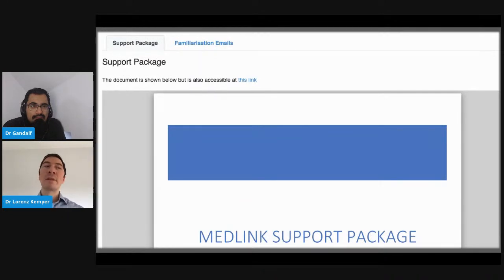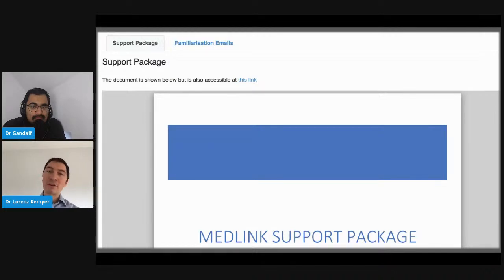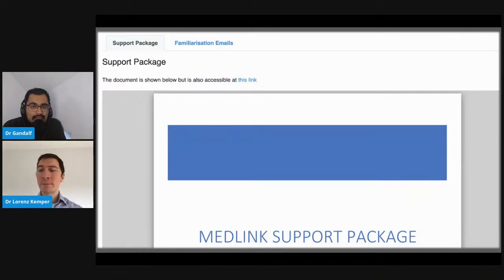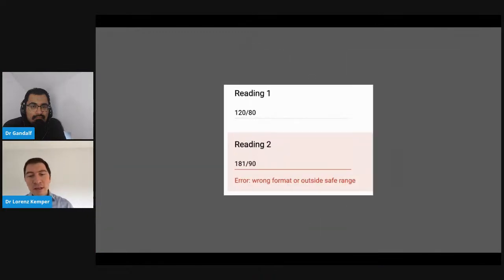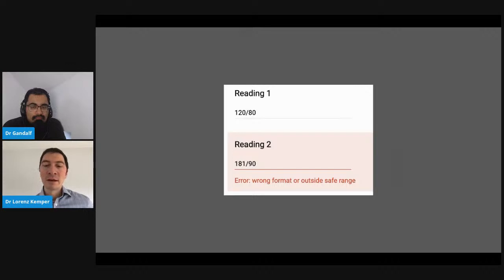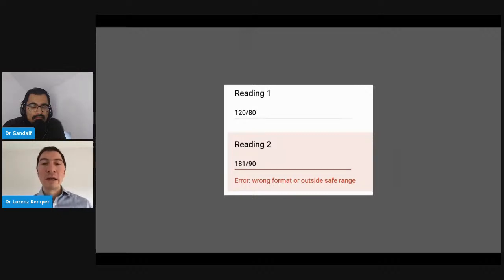We've tried to minimize system change because everyone is getting overwhelmed with new things. We integrate smoothly, with support packages and familiarization emails to inform team members. Safety features are built in — if a blood pressure reading is in the malignant hypertension range, the patient is informed there and then that it's outside the safe range and they need to contact the practice in the usual way.